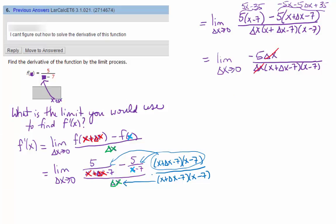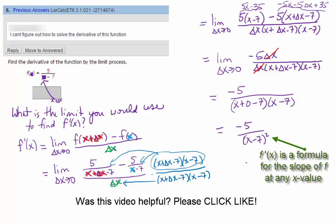They divide out to be 1. So now we can finally, getting rid of that factor of delta x, just plug in the 0. So instead of writing limit now, I'm going to plug in the 0. Negative 5 over x plus 0 minus 7 times x minus 7. Okay, which is going to be negative 5 over x minus 7 squared.